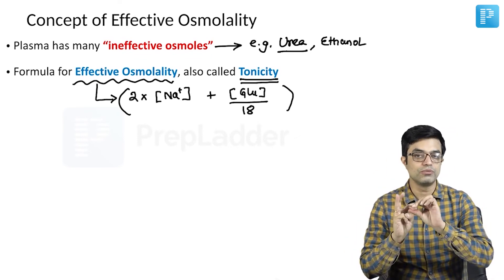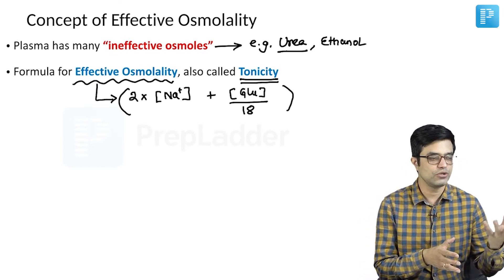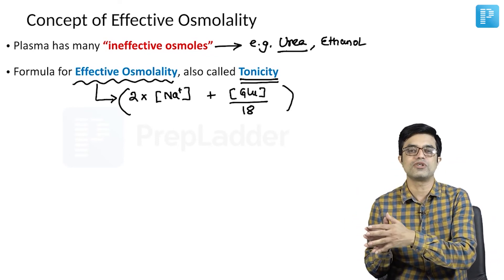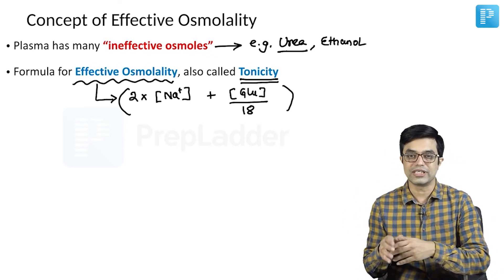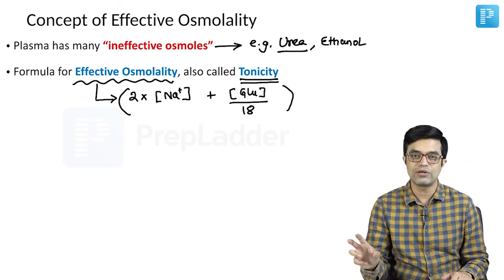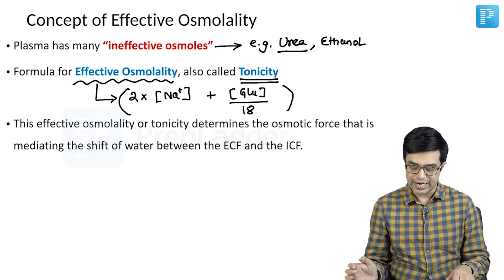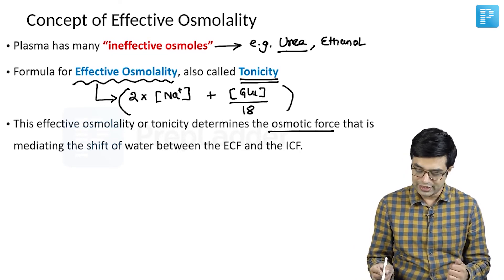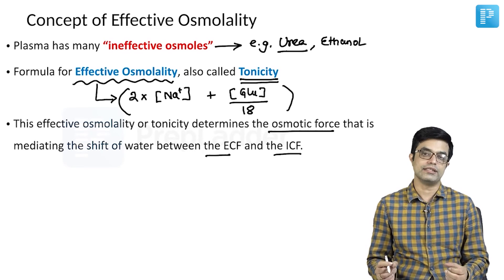To summarize, there are three osmolality terms to be clear about. First is actual (measured) osmolality. Second is formula-based plasma osmolality, which includes sodium, BUN, and glucose. Third is effective osmolality or tonicity, which is the actual force making fluid move from one space to another — it determines the osmotic force mediating the shift of water between the ECF and ICF.